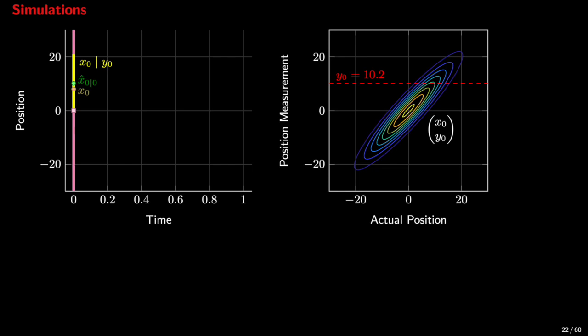our prior belief that the state is inside the pink bar. Once we obtain the measurement, we can now say that the state is inside the much shorter, narrower, yellow interval. The estimate x-hat-0-0 is determined from y₀ using what we refer to as the measurement update.